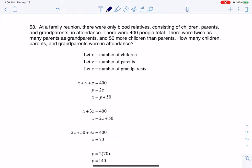Number 53, here we were told we're at a family reunion and we've got three sets of folks. We've got children, parents, and grandparents. We knew there were 400 people in total.